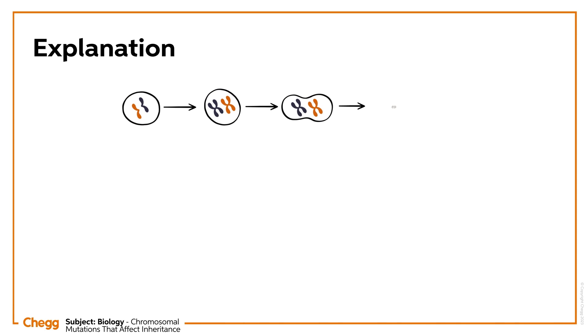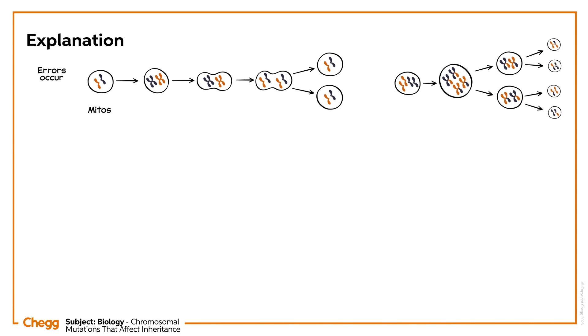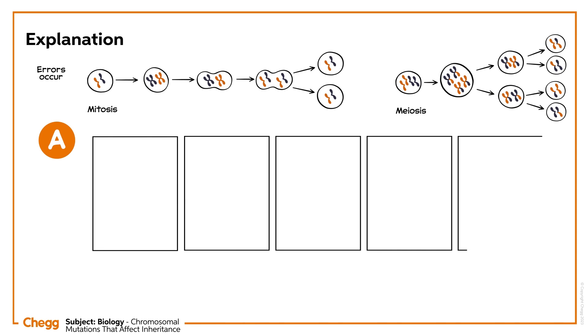Now, the main question is how these mutations occur. Errors generally occur during the cell division that happens via mitosis or meiosis, sex chromosomes. Based on the structural chromosomal aberrations, there are five types of mutations.